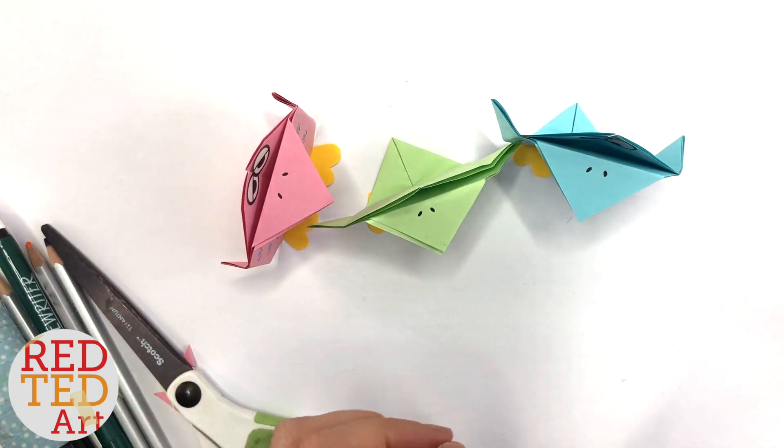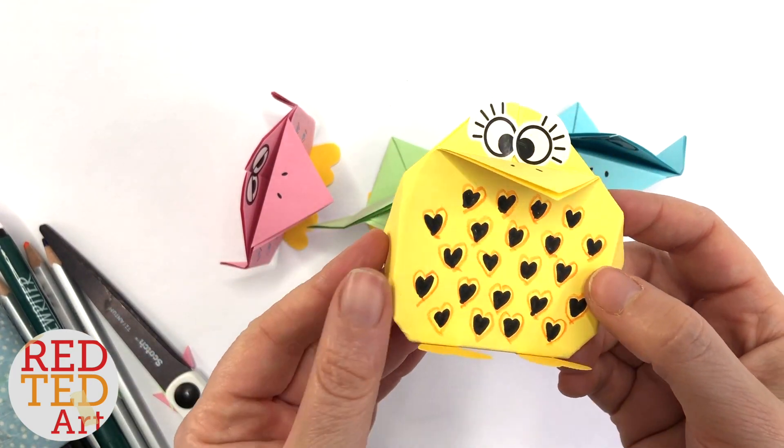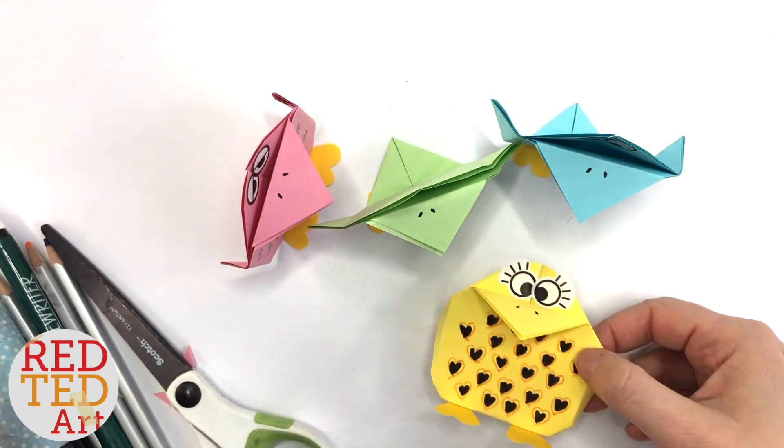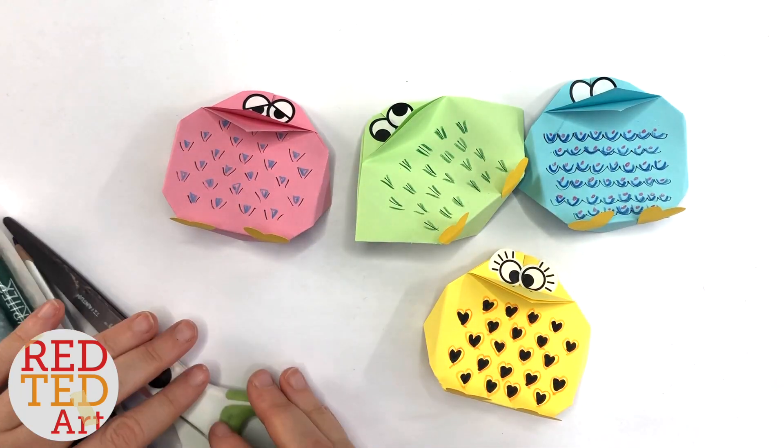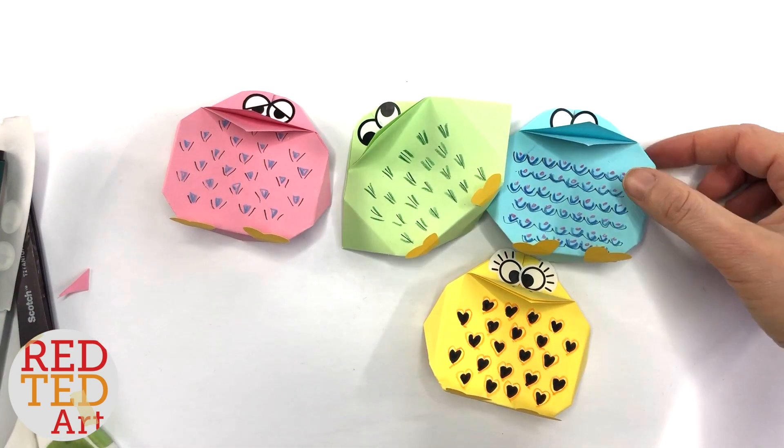And I quite like this one, my little yellow one. Look at that, little hearts. So really, you just decorate each bird as you wish. Have fun with the decorations. Use lots of different colors.